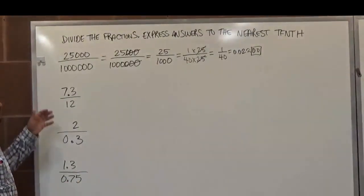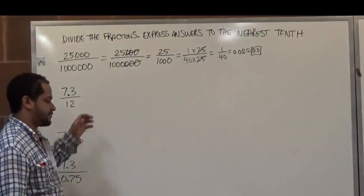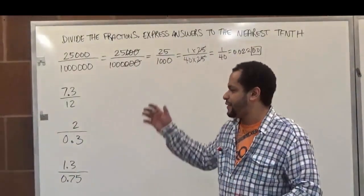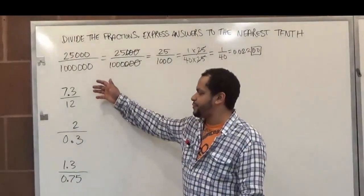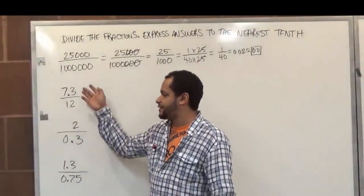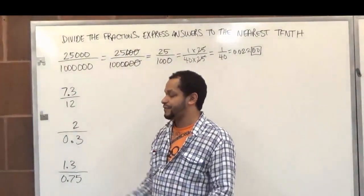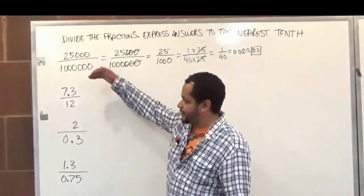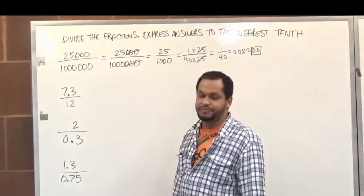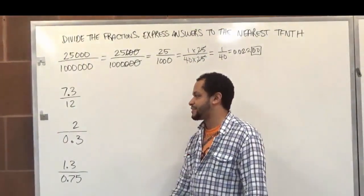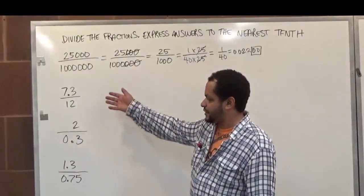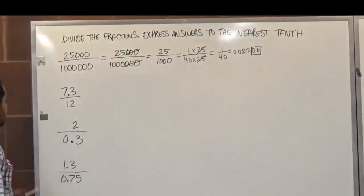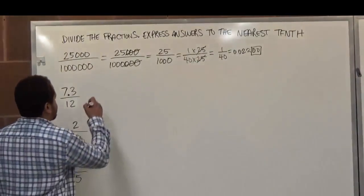Moving on to the next problem, we have seven point three divided by twelve. When we look at these two, we know that the root number of seven point three is seventy-three, and seventy-three and twelve have nothing in common. Twelve has multiples of two, six, four, and three, and seventy-three has no multiples that go into it at all. It's basically almost a prime number, with the exception of the decimal point which makes it harder to see. So here we're just going to divide the two to get this solution.